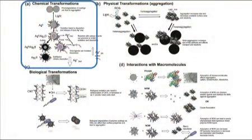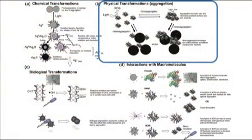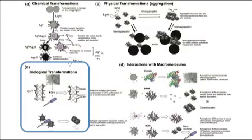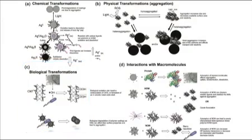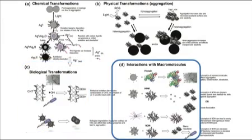What we really tried to do when we were developing the paper was to try and put these transformations into different categories. People like to have categorizations of things. So that's why we came up with chemical transformations, physical transformations, biological transformations, and then our separate category which was adsorption of organic macromolecules, because that's such an important transformation process.